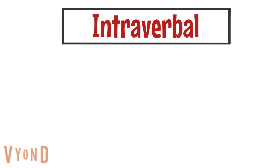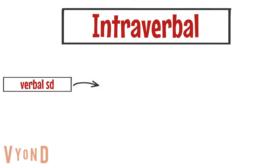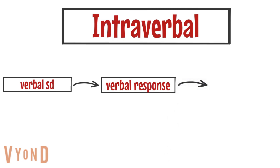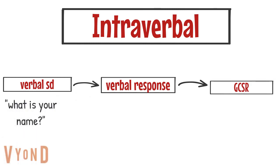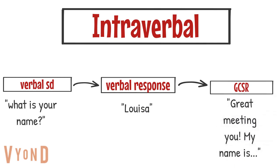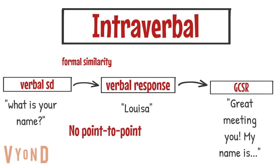The next verbal operant is the intraverbal. The intraverbal is a type of verbal operant in which a speaker differently responds to the verbal behavior of others, and intraverbals are important components of many normal intellectual repertoires. For example, asking somebody what their name is — the response is they tell you their name, and the generalized conditioned reinforcer could be praise or continuation of a conversation. In an intraverbal, there is no formal similarity and no point-to-point correspondence.